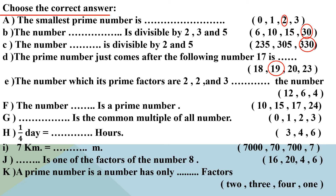Letter E: the number whose prime factors are 2, 2, and 3. We multiply: 2 × 2 × 3. 2 × 2 = 4, and 4 × 3 = 12. So the answer is 12.